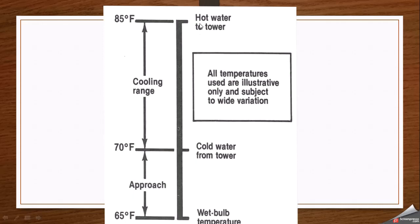Using a typical illustration: hot water enters at 85°F and cold water at 70°F is obtained after passing through the cooling tower. The difference — 85 minus 70 — gives a cooling tower range of 15°F. For approach, if the wet bulb temperature is 65°F and the cold water temperature is 70°F, the difference of 5°F is the approach. As this delta becomes smaller, we get a lesser approach value, and the efficiency of the cooling tower increases.